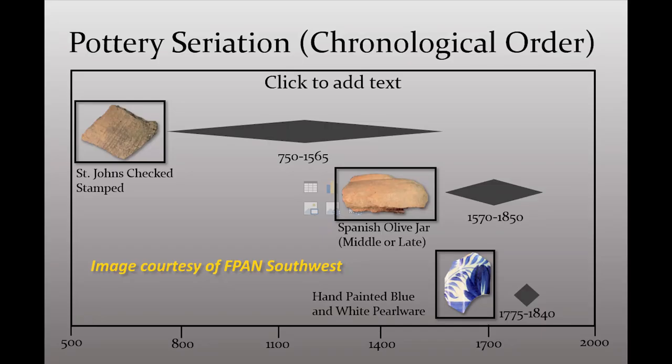When we talk about relative dating, we talk about changes in design and technology over time. When we talk about technology, we don't necessarily mean electronics or anything particularly modern. We can be talking about changes in pottery technology, changes in architecture. We use all of these changes over time to create a seriation, which allows us to get some pretty accurate dates and time spans as to when certain sites were inhabited and when certain artifacts were being made.